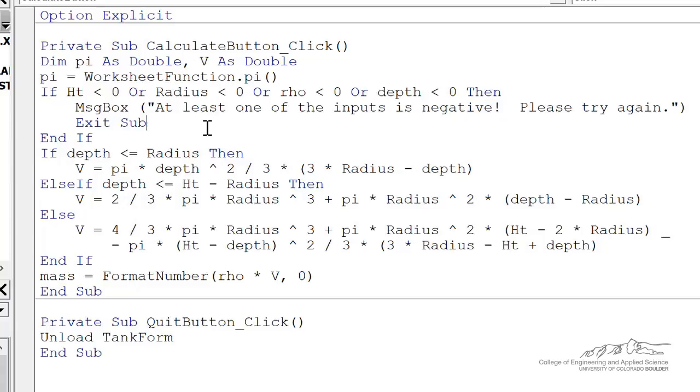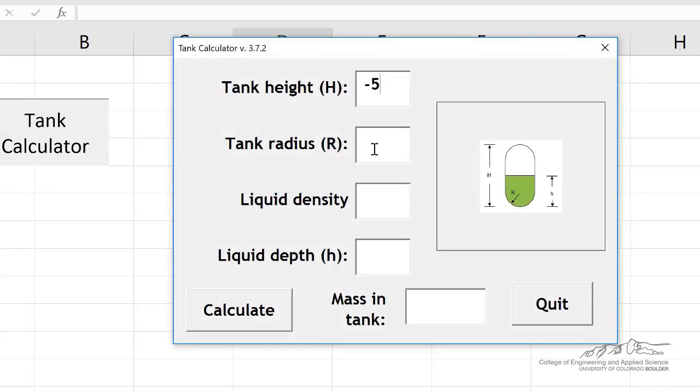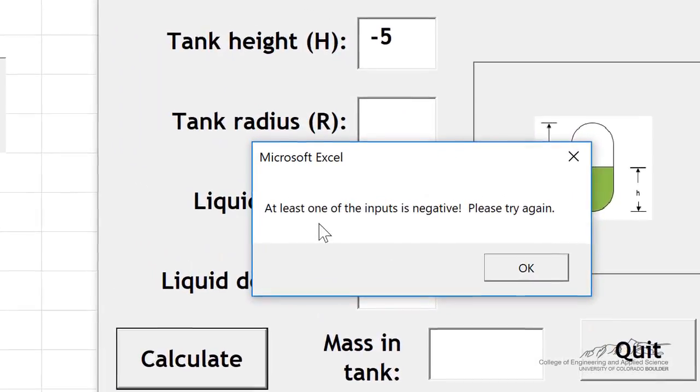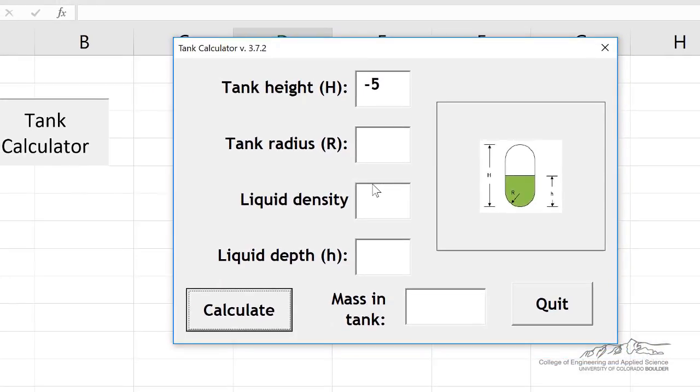In general, you shouldn't use exit sub unless it's for something like input validation in user forms. So let's go ahead and see if this is working. If I put in something like a negative 5, then it tells me at least one of the inputs is negative. Please try again. So we've protected against the first type of input validation.